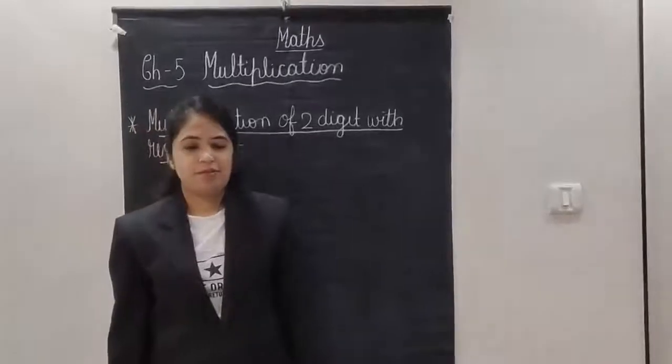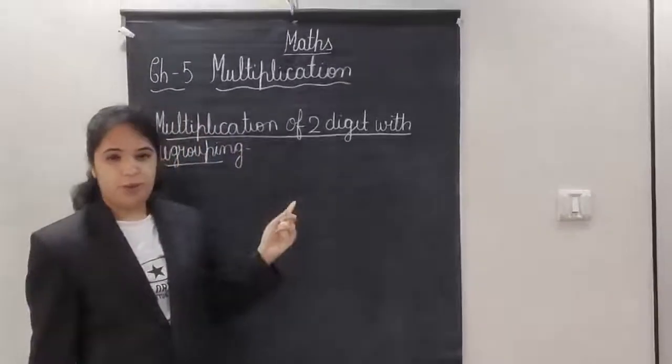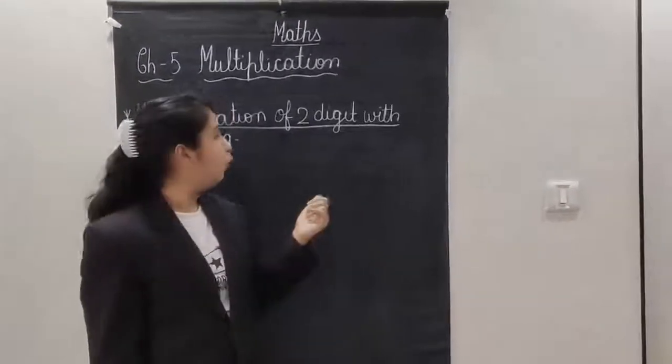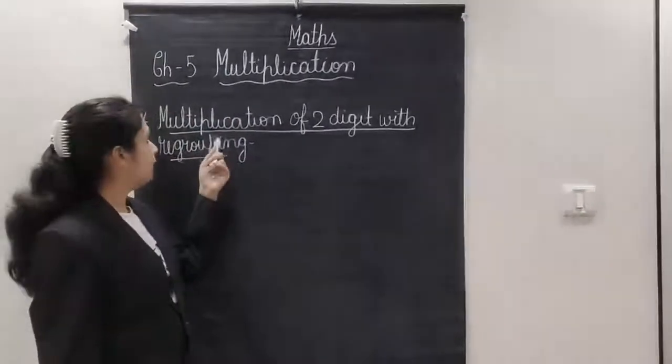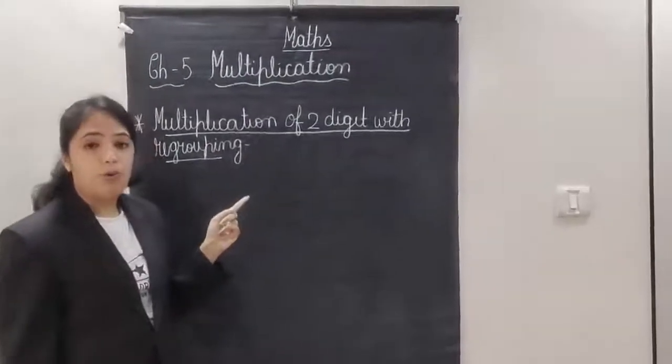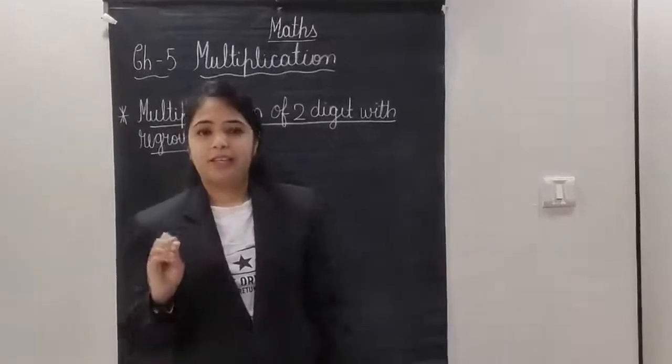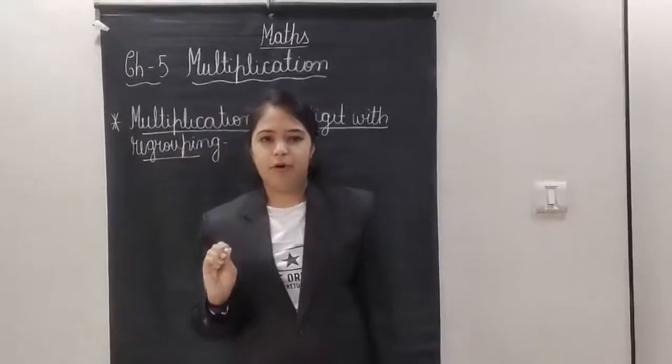As in the last class, we have done the multiplication of 2 digits without regrouping. Now this time, we have started the new topic which is multiplication of 2 digits with regrouping. How to do with regrouping? With regrouping means there is a carryover in the sum of multiplication.